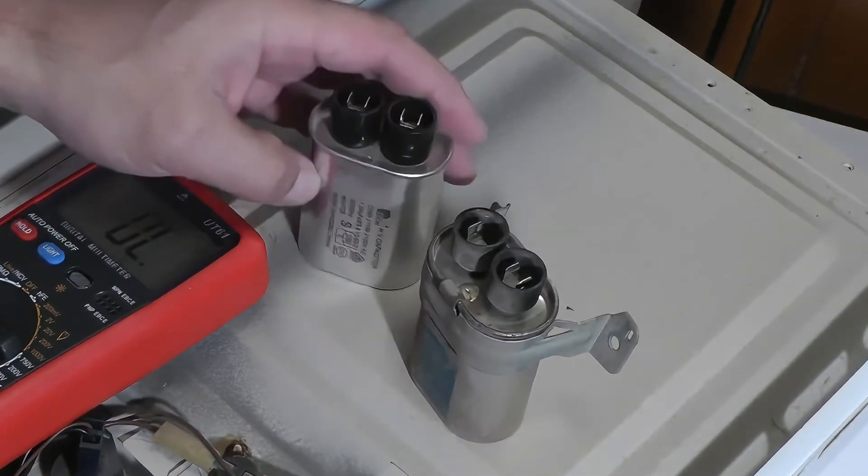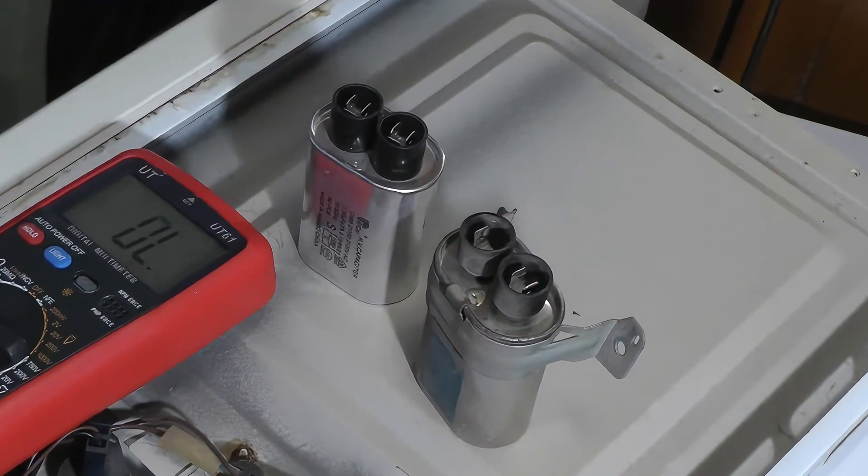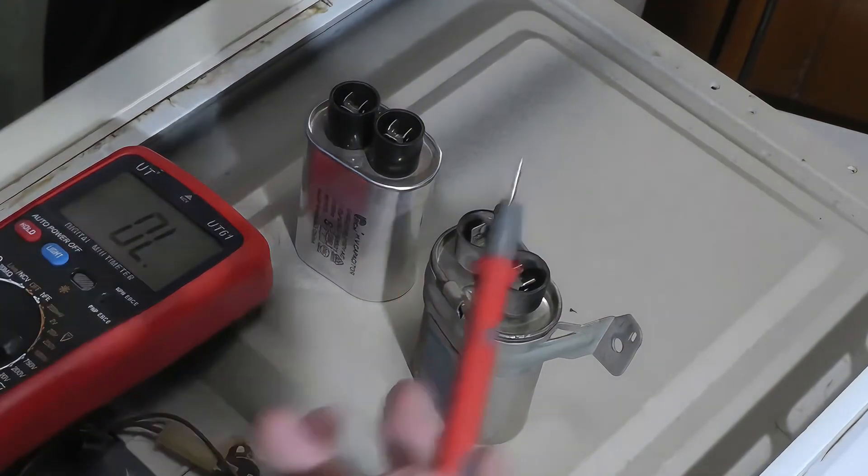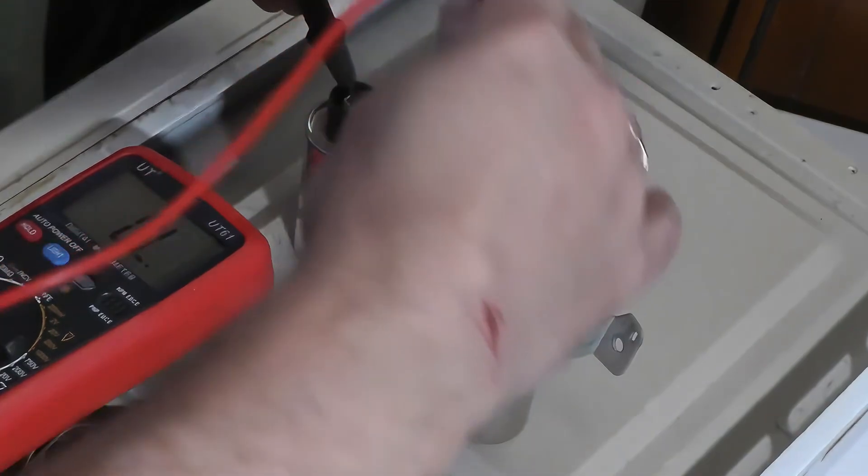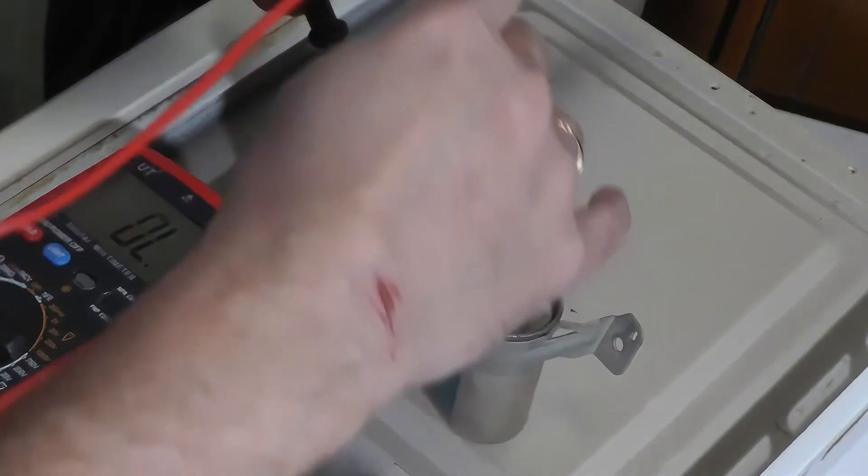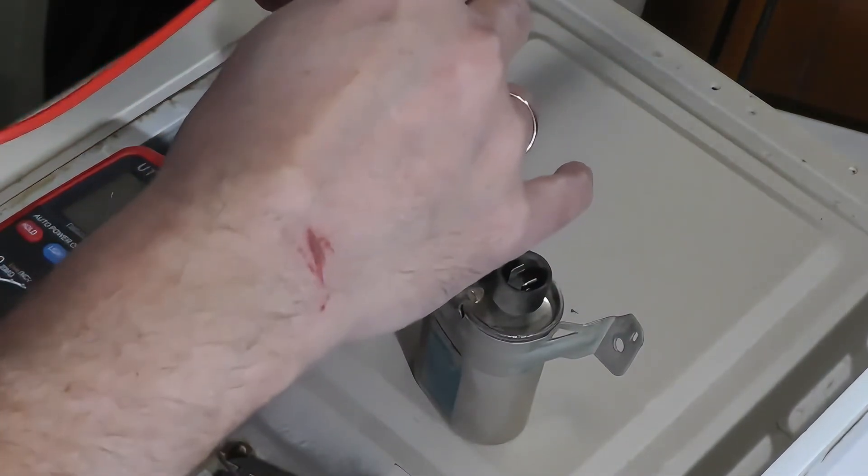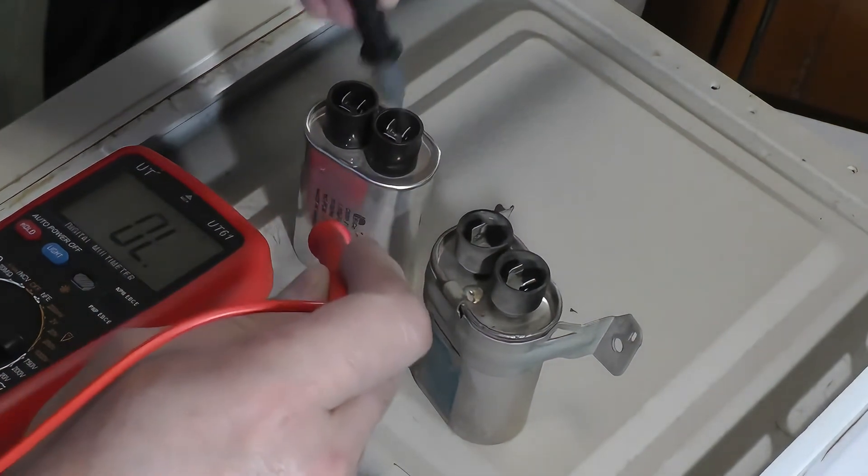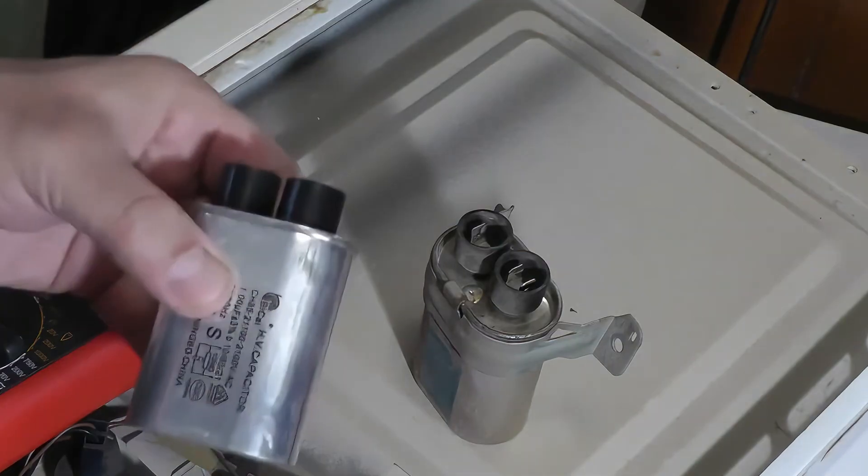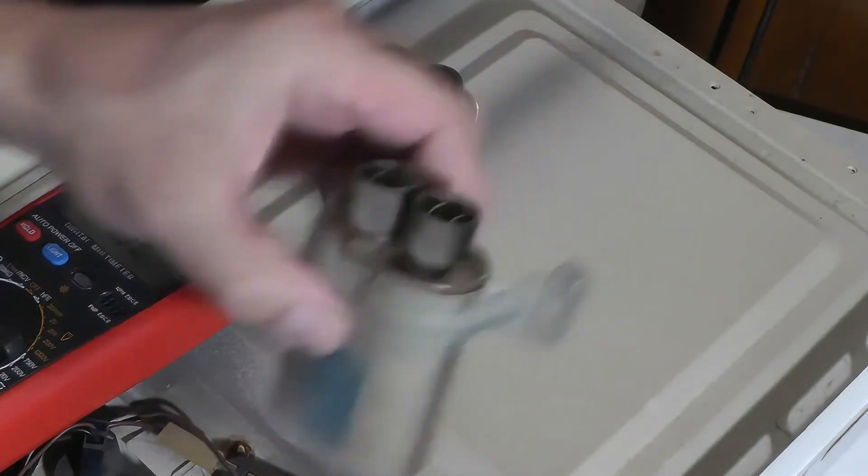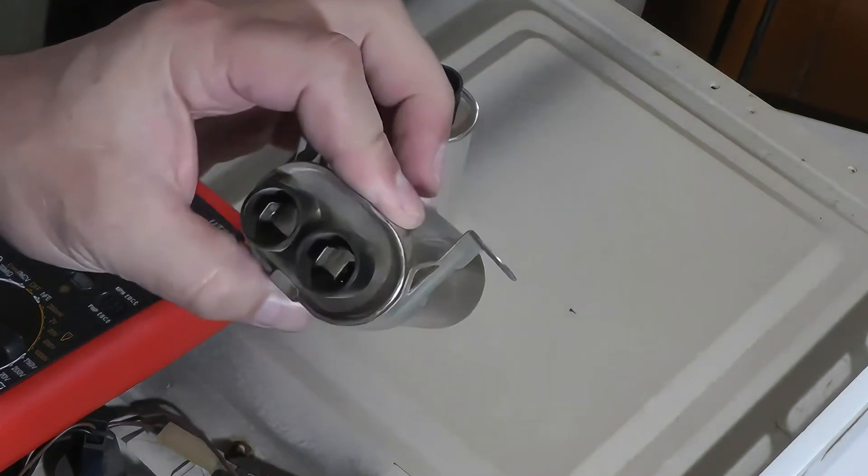Now I'll show you how a working microwave oven capacitor behaves. When the probes are connected to the capacitor terminals on the multimeter, there is no beep and no readings displayed on the screen. Let's also check for a short to the case. Everything is fine here. So this capacitor is working properly but that capacitor is shorted and will not work.